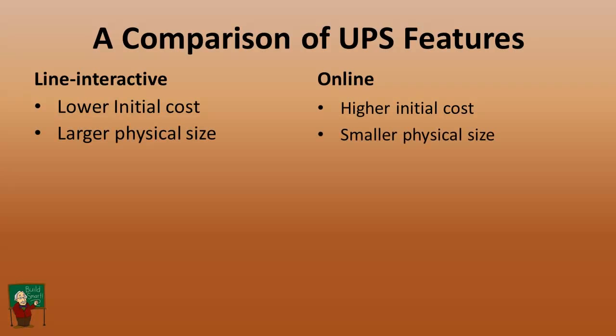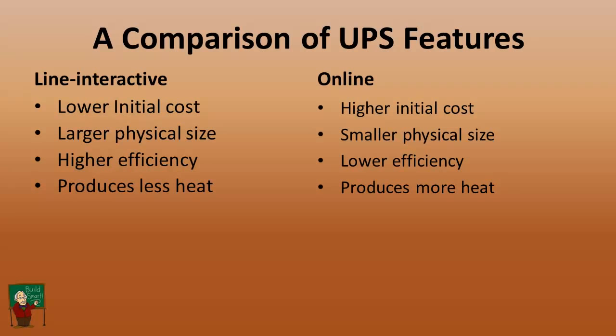The line interactive is typically larger physical size. The online would usually be somewhat smaller. The line interactive operates at a higher efficiency because most of the time the inverter doesn't have to operate. So it can charge the batteries up and then provide very little power consumption from the unit itself. It's just passing the power through. Because of the fact that it's doing less during normal operation, it produces less heat as part of that efficiency.